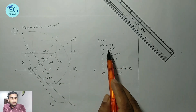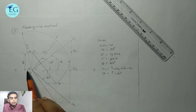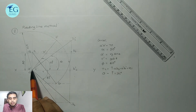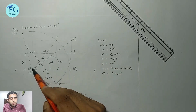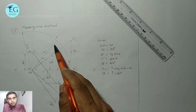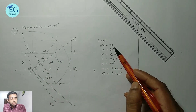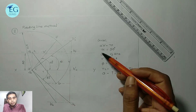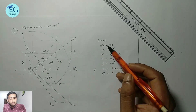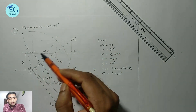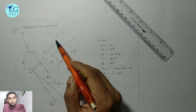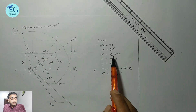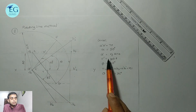First, A' is located on the XY line. Then draw A'B' at 50 degrees with length A'B' equal to 70 mm. This gives us the front view A'B' at 50 degrees.